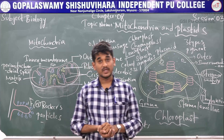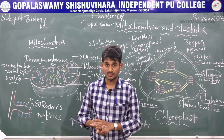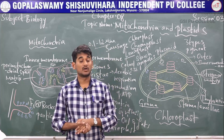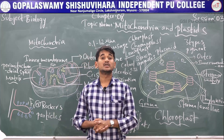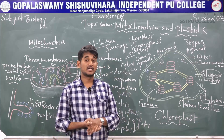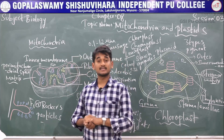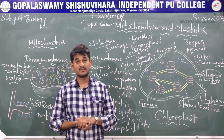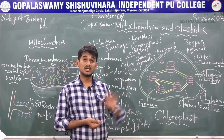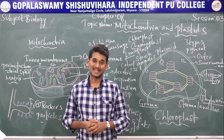In this session we have discussed the endomembrane system, including endoplasmic reticulum, Golgi complex, lysosomes, and vacuoles, as well as membrane-bound organelles like mitochondria — the powerhouse of the cell — and plastids, classified based on their pigments into chloroplast, chromoplast, and leucoplast. Thank you.